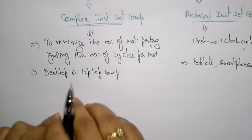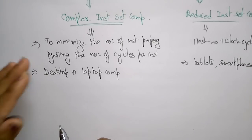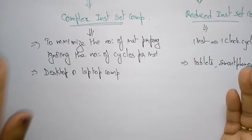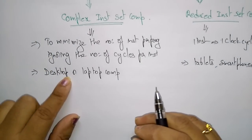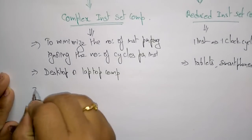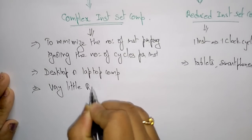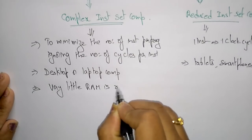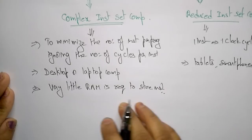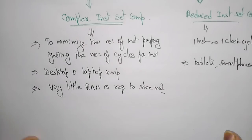In CISC, the compiler has to do very little work to translate the high-level language to machine code because the length of the code is relatively short, unlike RISC where the code length is more. Because the code length is short, only a small amount of RAM is required to store instructions.